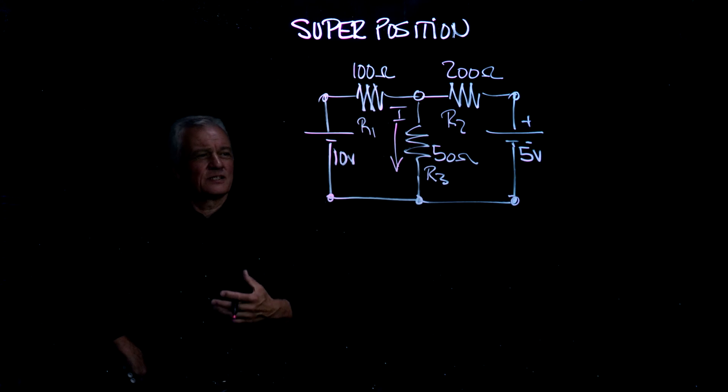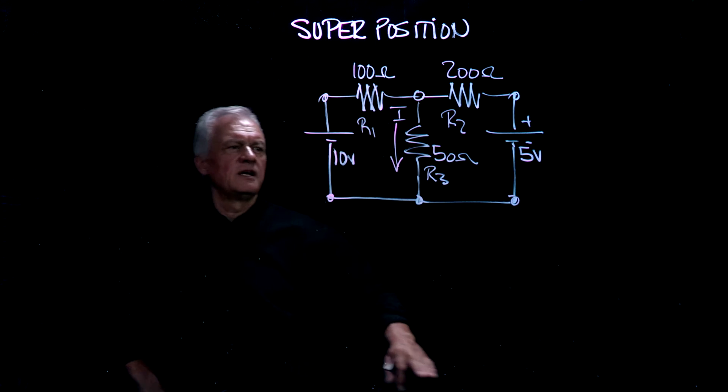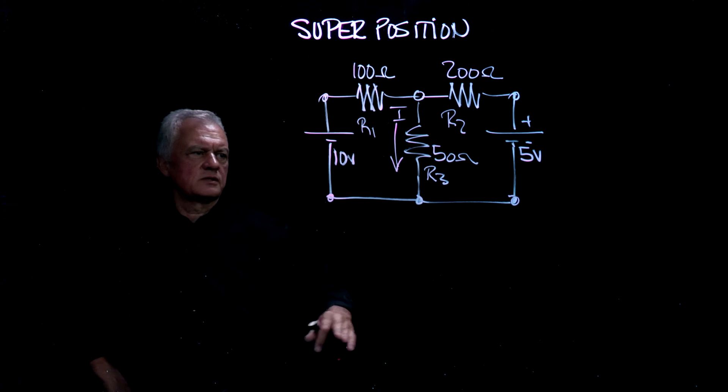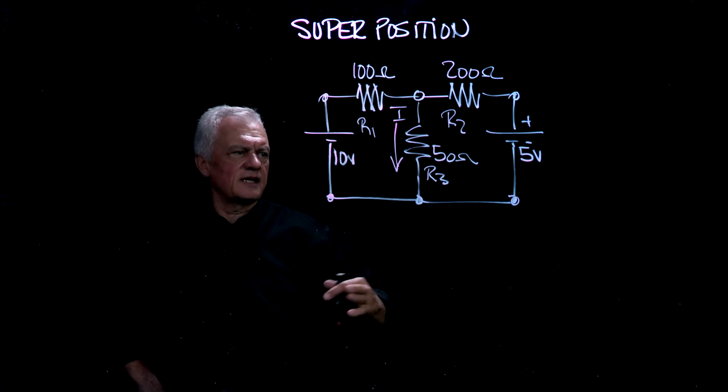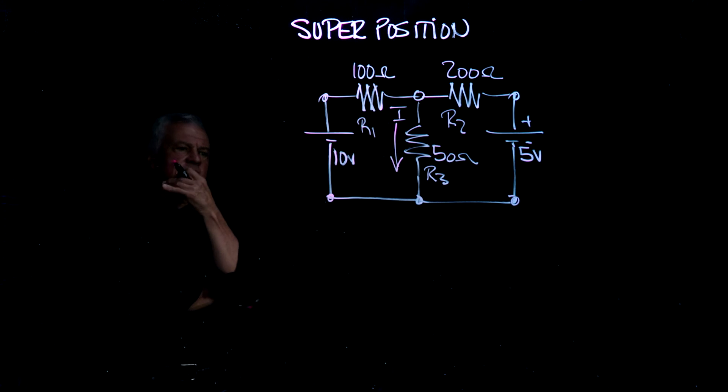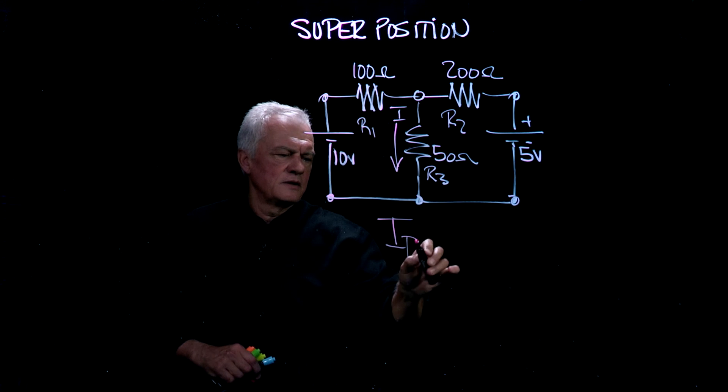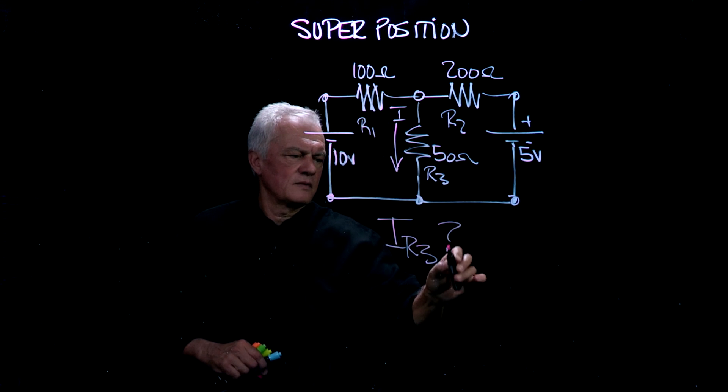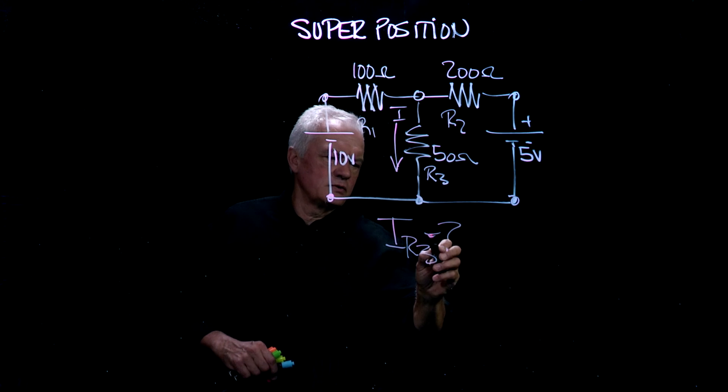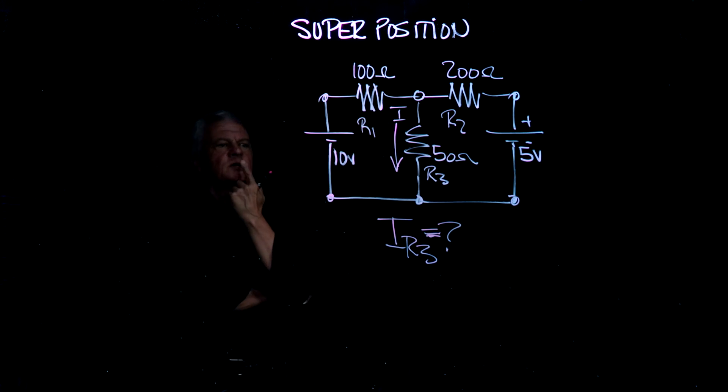Another analogy: if you look at the electrical network of Ontario, you could have Bruce Generating Station, Darlington Generating Station, and maybe Pickering. They're all generating voltages. When you start to do a grid analysis, you have to see the contribution from each one. So we're going to ask the question: what is the current in R3 from these two sources? How do we go about doing that?